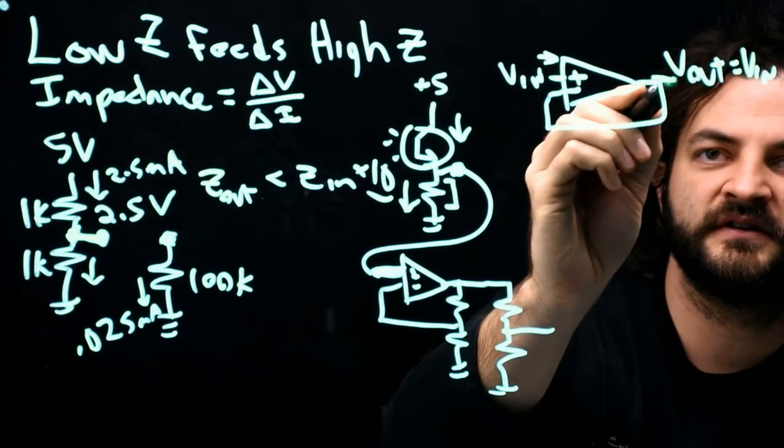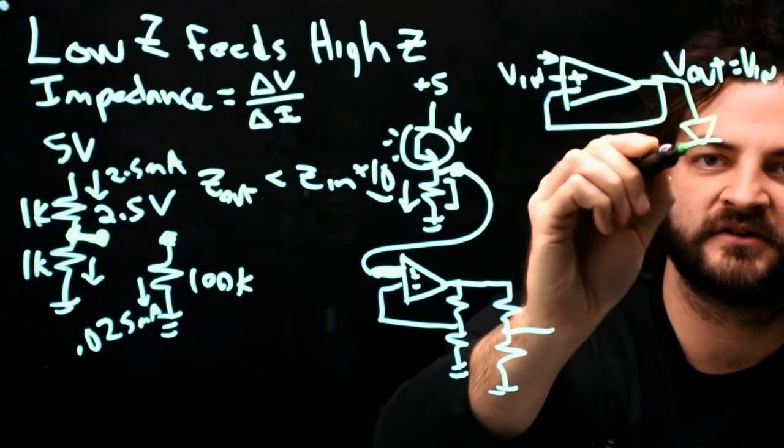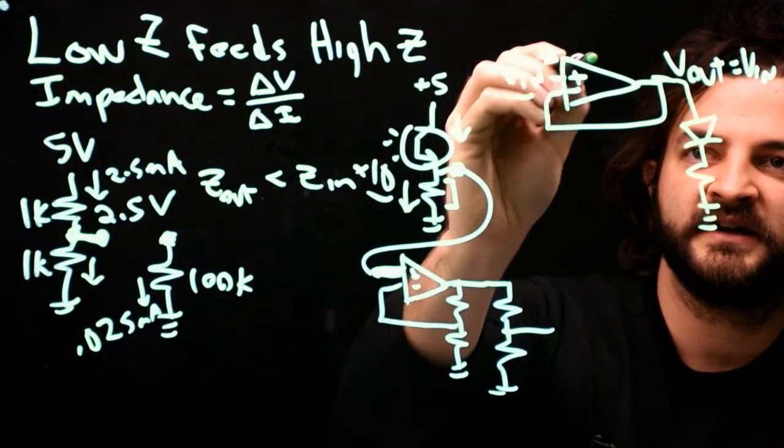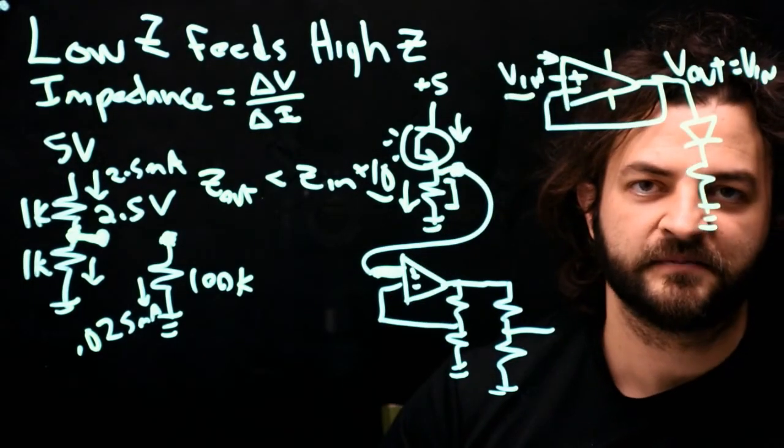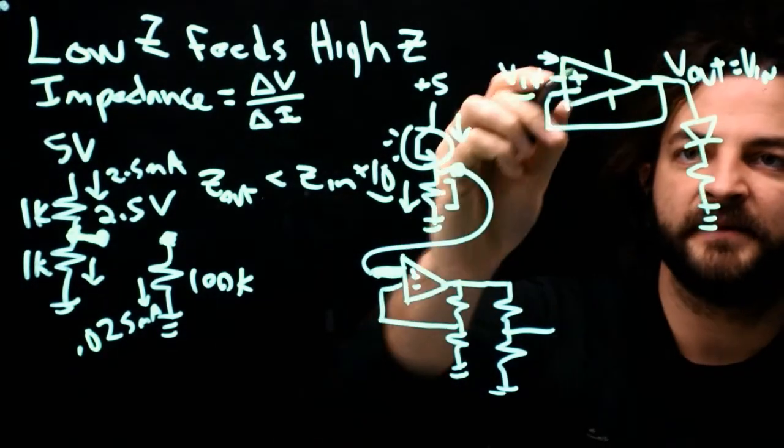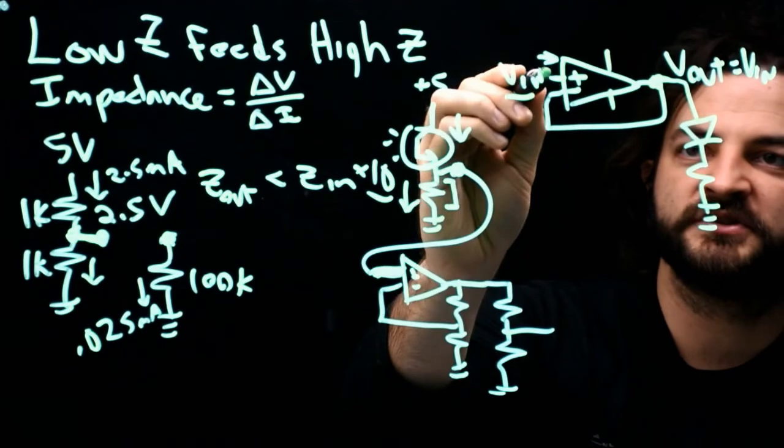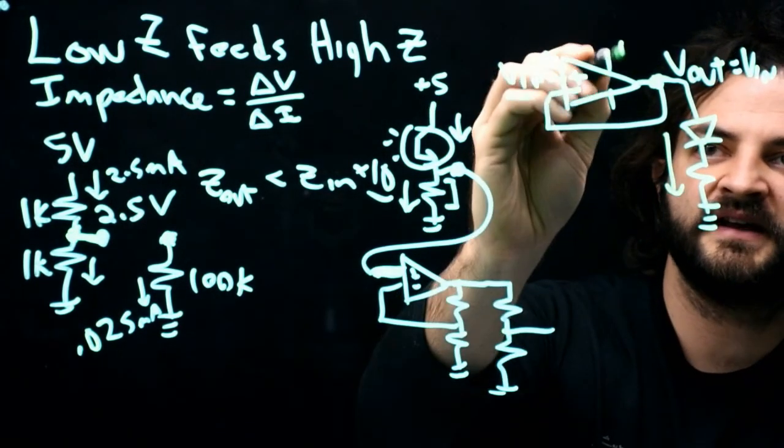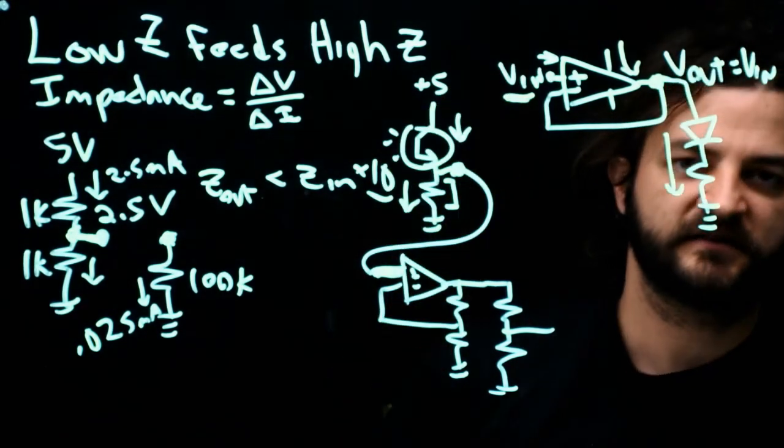And then where does the current that goes to the next part of the circuit, maybe it has to power an LED, come from? It's not coming from here, it's coming from the power supply that the op amp is plugged into. So the op amp is intelligently copying the voltage from here to here, and any current that needs to go that way, it's taking from the power supply, leaving this guy unaffected.